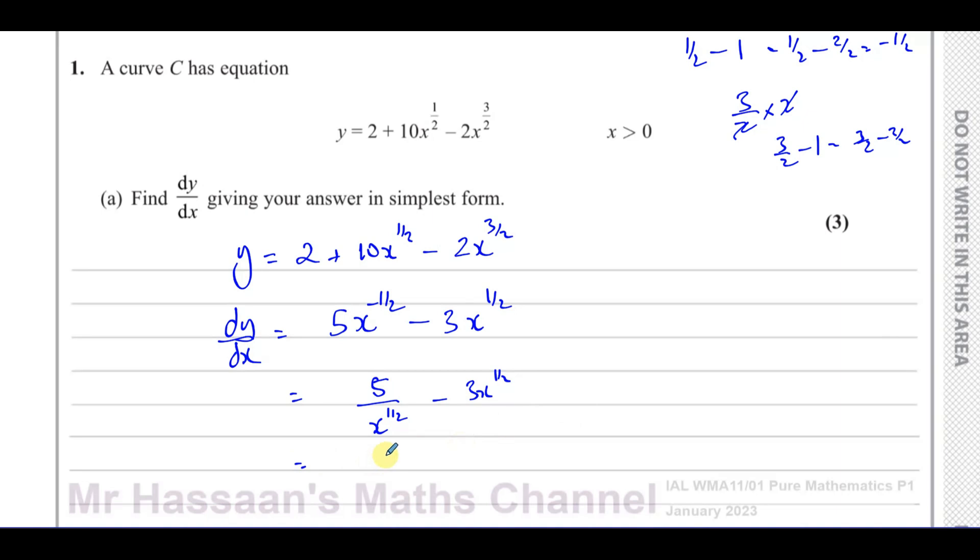Both of these are fine. You can also write this as 5 over the square root of x minus 3 times the square root of x. That would also be fine. Any of those three ways of writing the answer is fine. I personally would just leave it like this. And that's absolutely fine for this question.